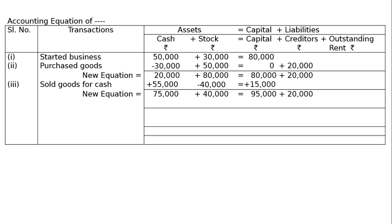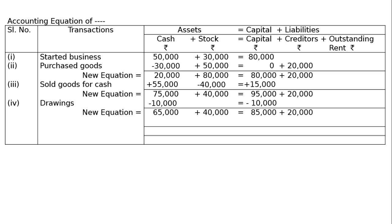Transaction four: withdraw cash for personal use — this is called drawings. Cash is reduced by 10,000 and capital is also reduced by 10,000. The new equation: cash rupees 65,000, stock rupees 40,000 — total 1,05,000 — capital rupees 85,000 plus creditors 20,000 also equals 1,05,000. LHS equals RHS.